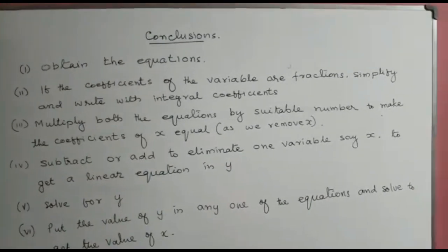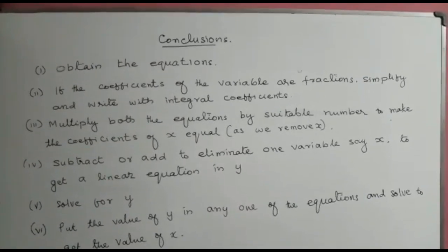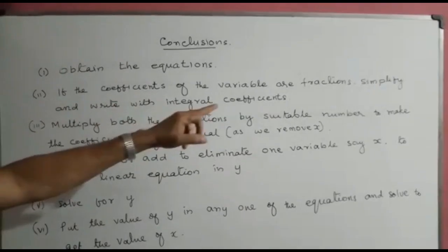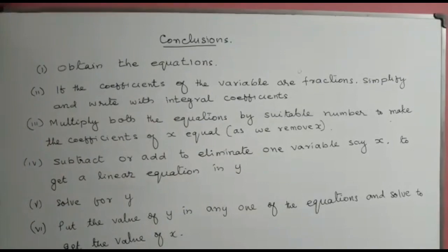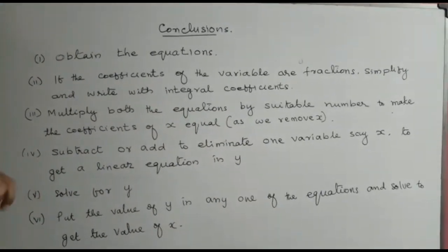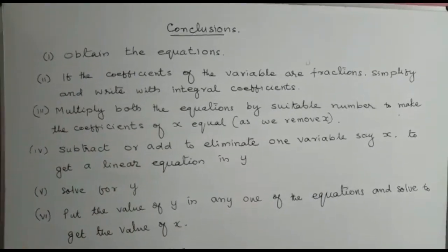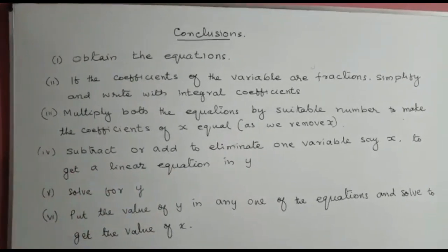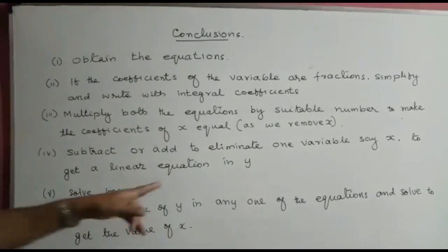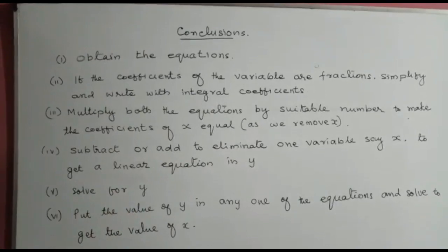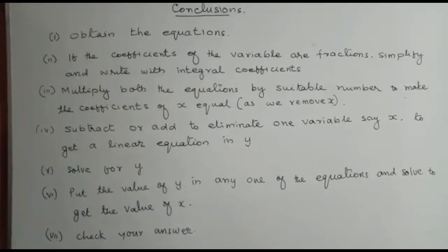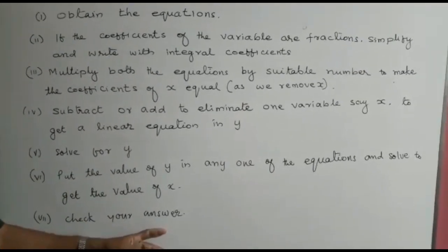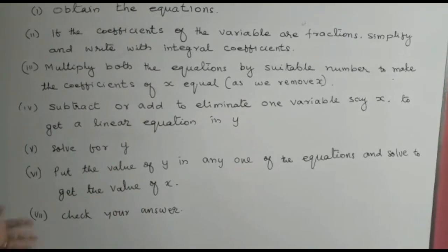Let us conclude. First, obtain the two equations. If the equations do not have integral coefficients, simplify the fractions and write with integral coefficients. Multiply both equations by a suitable number to make the coefficients of x equal — or y. Subtract or add to eliminate one variable, getting a linear equation in the other variable. Solve for y, then substitute back to find x. Check correctness by substituting both values — if LHS equals RHS, the answers are correct.